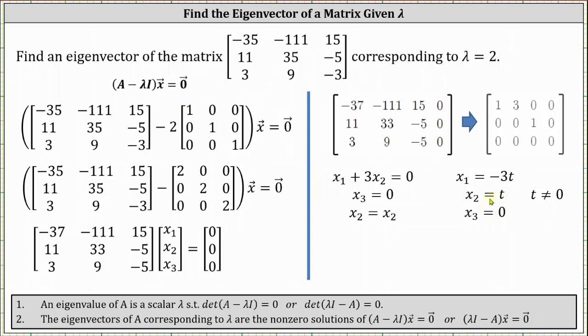Remember, an eigenvector cannot be the zero vector, so t ≠ 0. All eigenvectors x corresponding to λ = 2 have the form (-3t, t, 0).